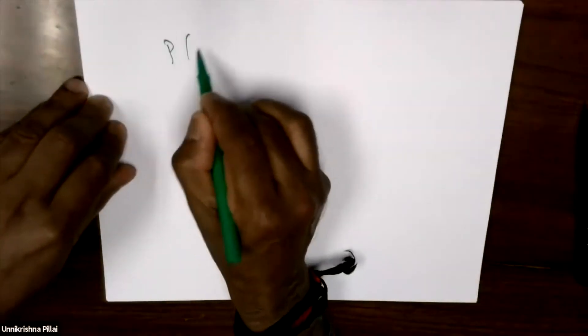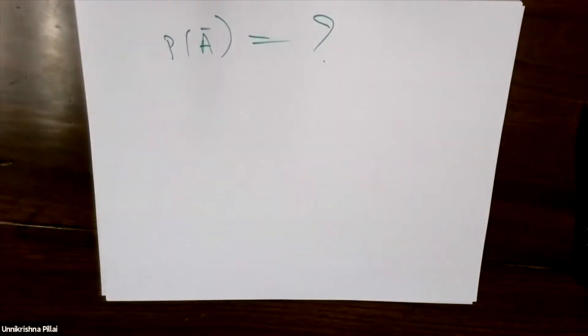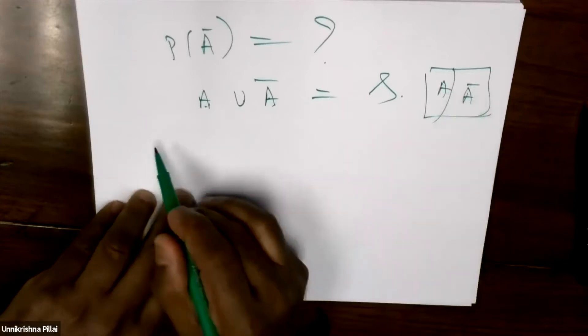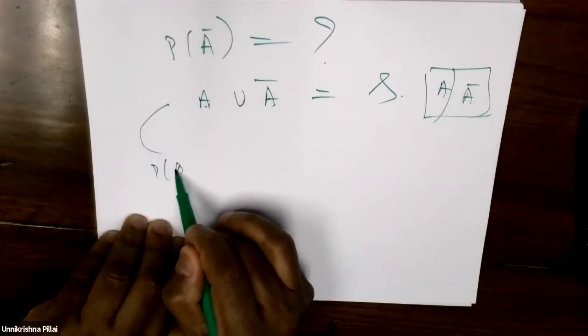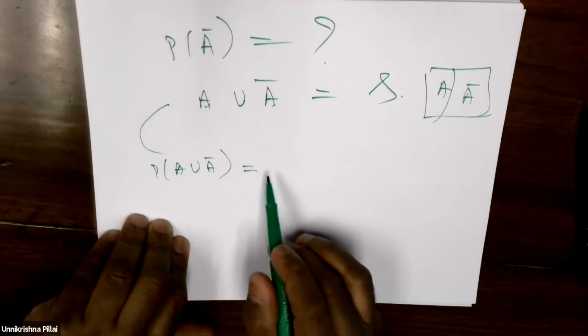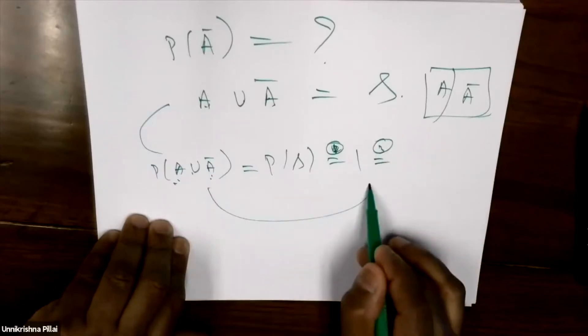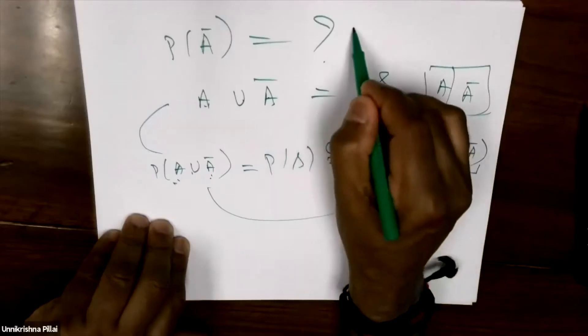What is the probability of A-bar? It's 1 minus P(A). How do you get it? A union A-bar is the whole set, so the probability of A union A-bar is 1, by axiom 1. These two are mutually exclusive, so by axiom 3, this equals P(A) plus P(A-bar). Therefore P(A-bar) equals 1 minus P(A). Notice that I used two axioms — this is what is meant by a proof.